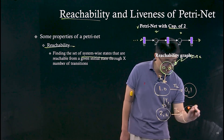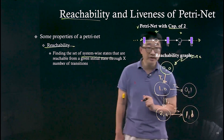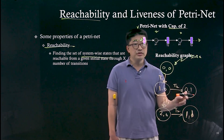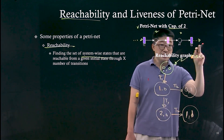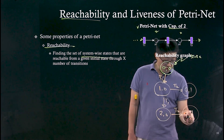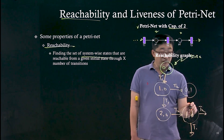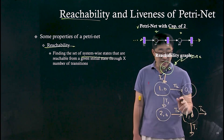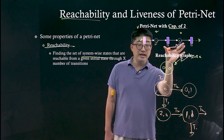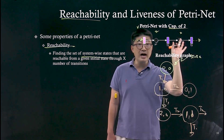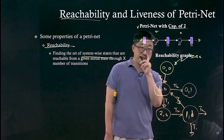We can fire T2 from 2,0 and reach state 1,1. From 1,1, the feasible transitions are T1, T2, and T3. We can fire T1, we can fire T2, or we can even fire T3. Firing T3 from 1,1 moves a token out, resulting in state 1,0 — and that state is already specified in our graph, so we loop back through T3.